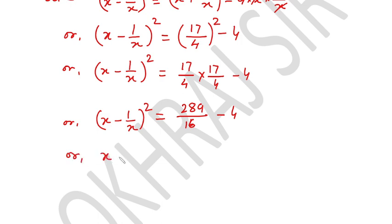Or x minus 1 over x whole squared equals, LCM 16, that means 289 minus 64 equals 225 over 16.